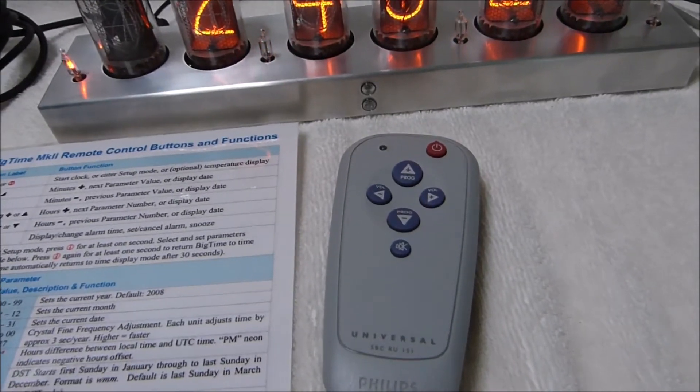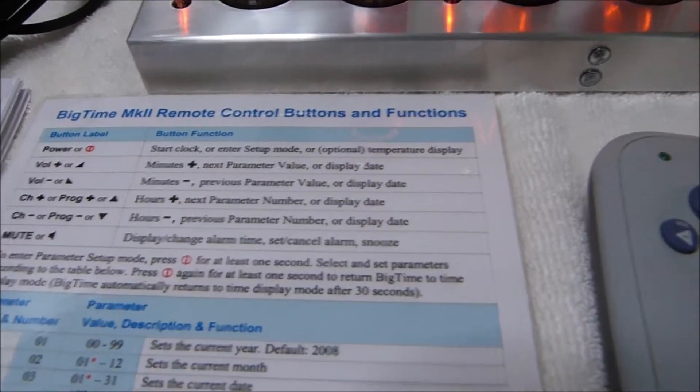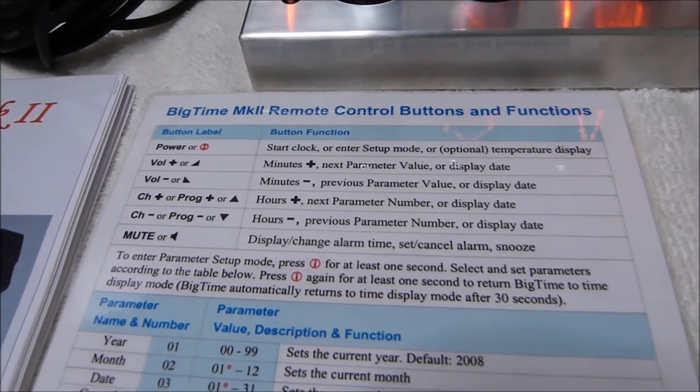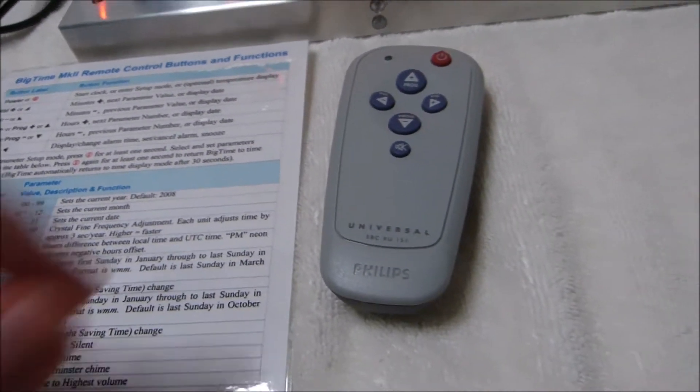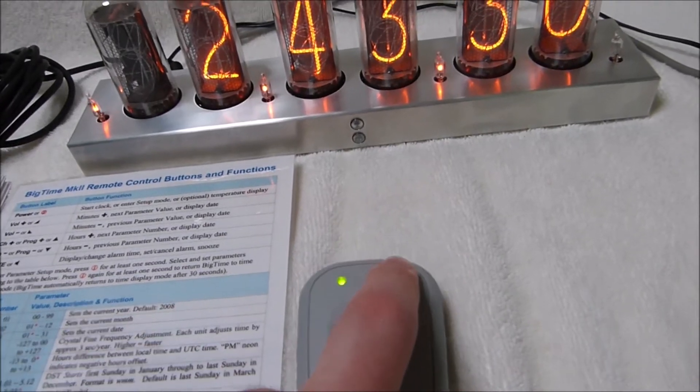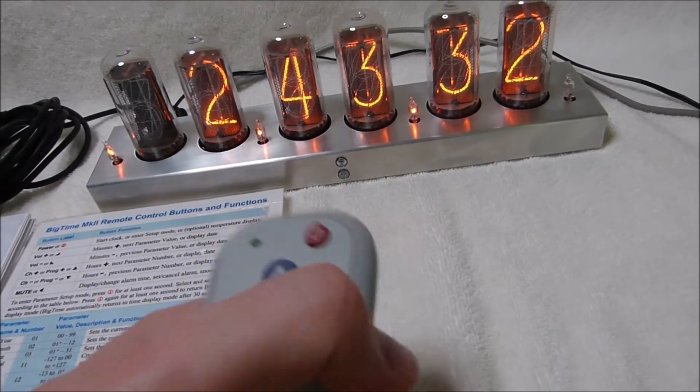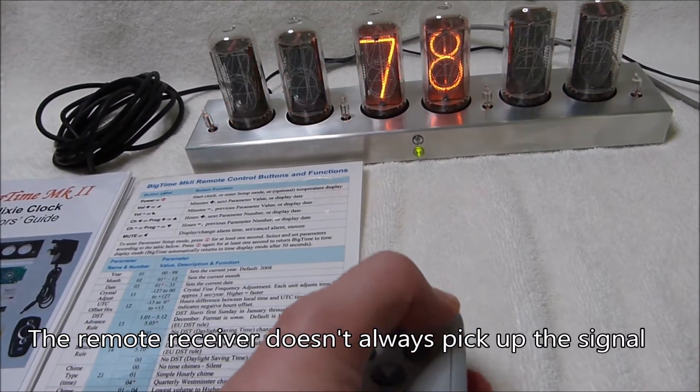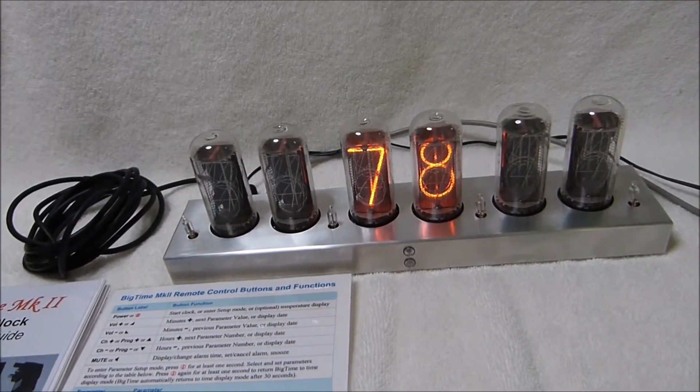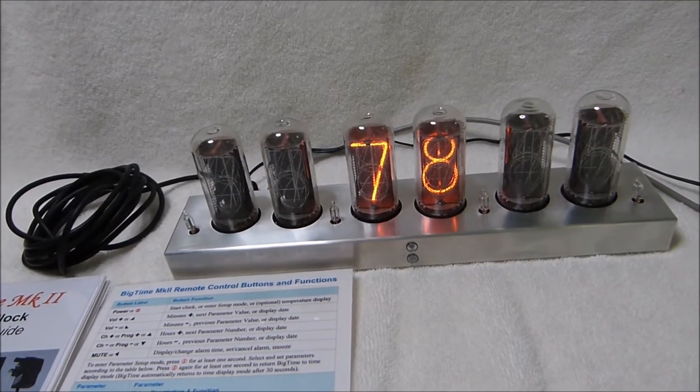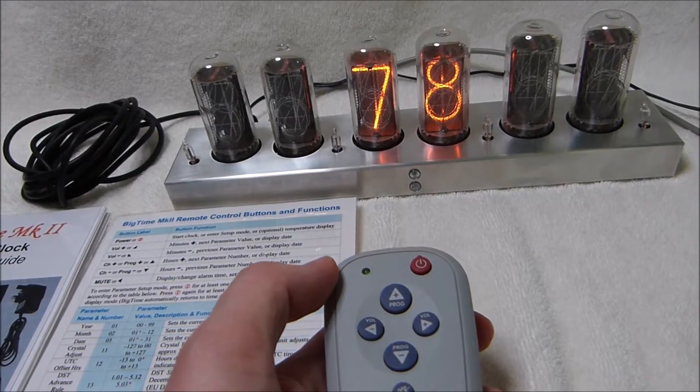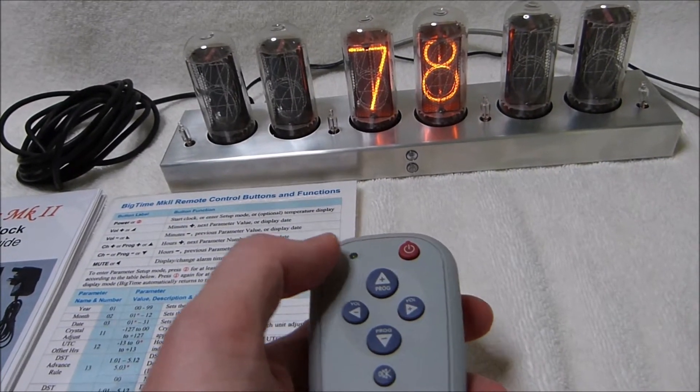This remote control doesn't have very many buttons, and I wish they had used them a little bit differently to be honest. Pressing the power button brings up the temperature display. See it says 78, it's a bit warm in here right now, and the clock is off a fair bit of heat.